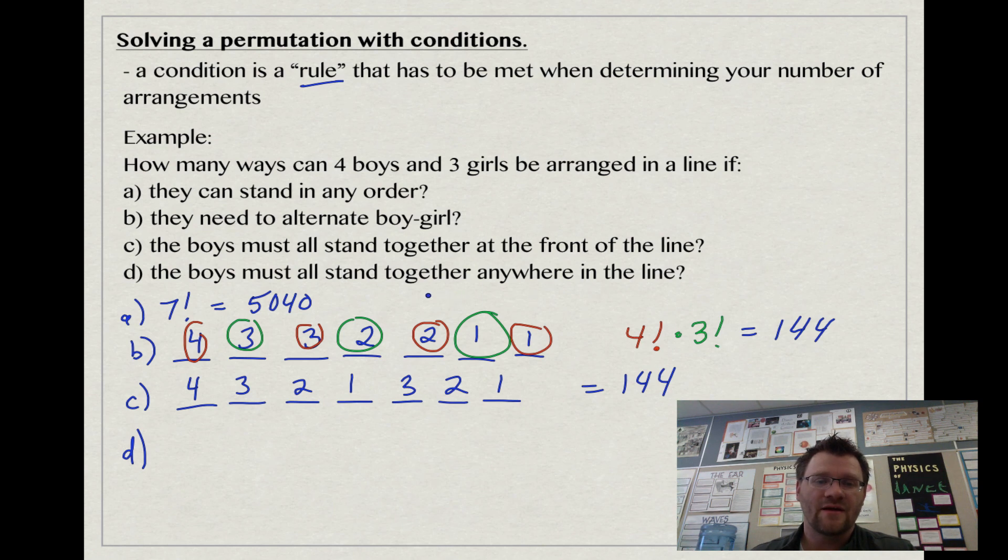Part D: they all have to stand together anywhere in the line but as long as they're standing together. I could have all four boys in these positions, or they could all shuffle down one, or shuffle down one again, or shuffle down one for a final time. It's this arrangement, but you could do this in four different ways because these boys could be in four different positions. We get 144 multiplied by four, which gives you 576 different arrangements.